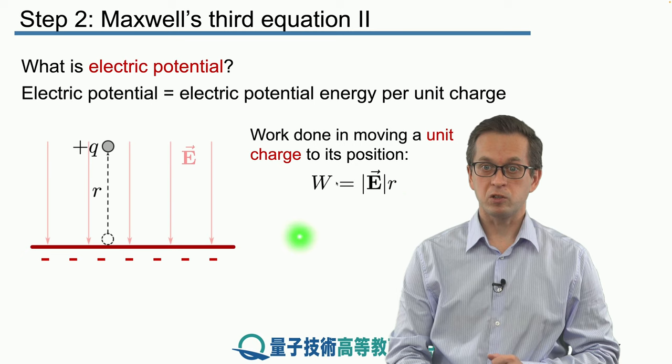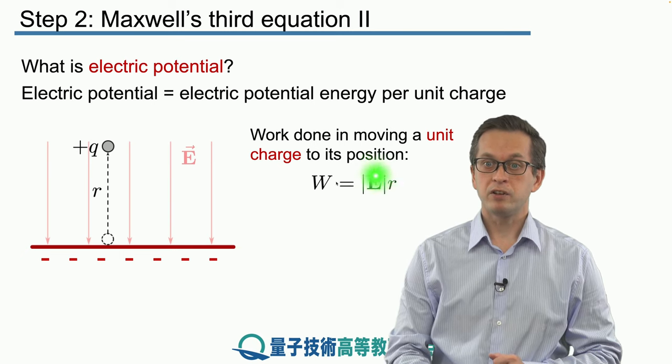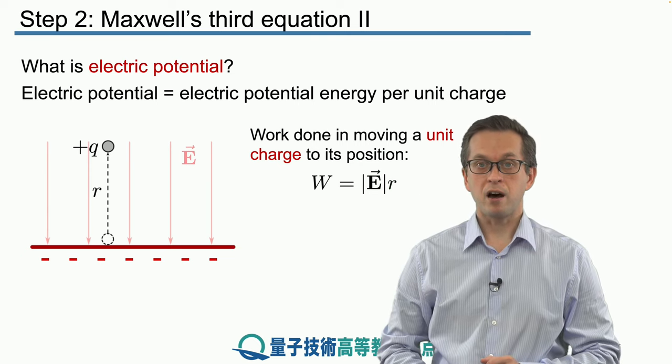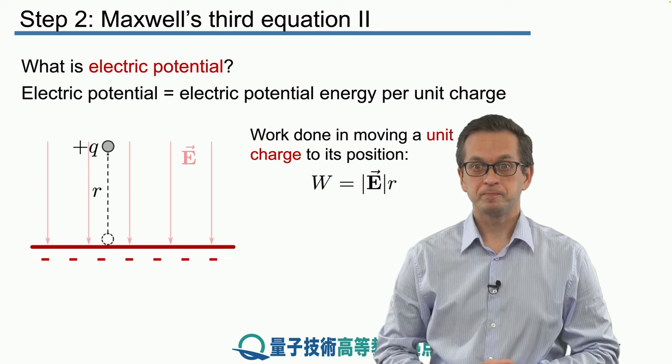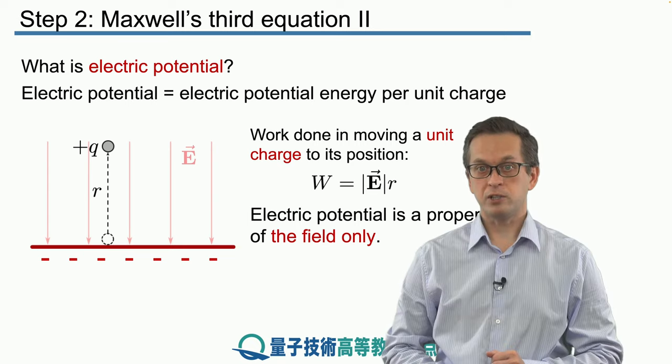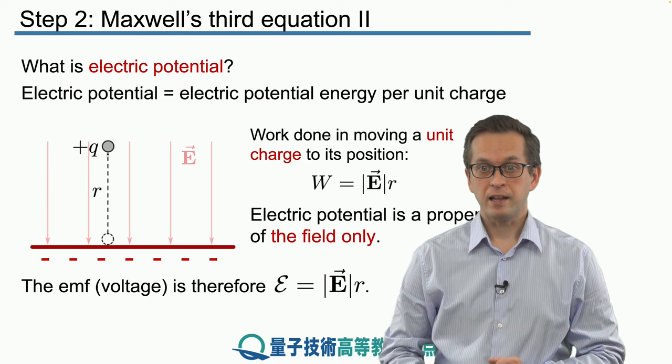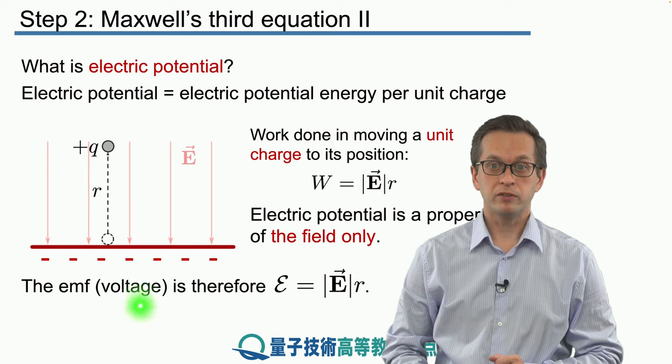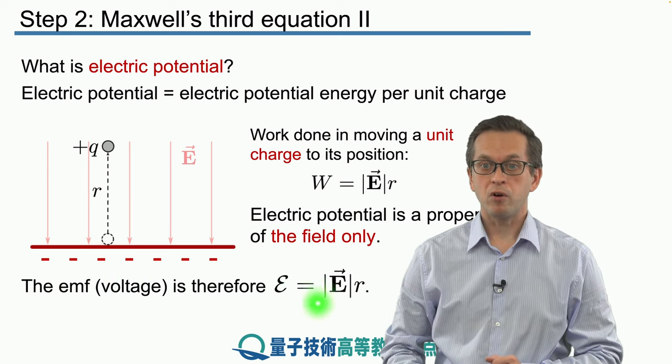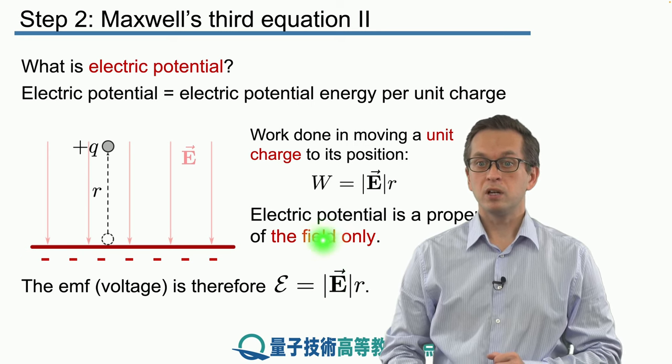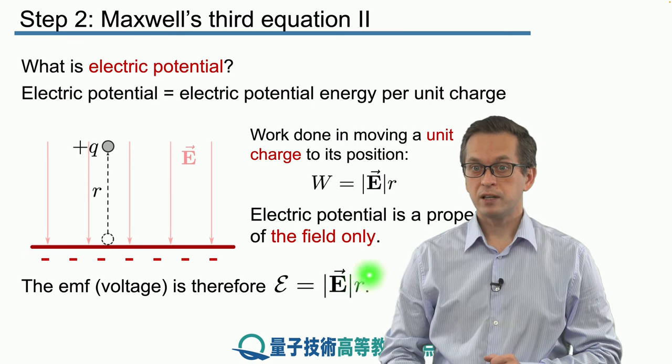So in this case, the work done that needs to be done is given by the magnitude of the electric field times the distance r away from the conducting charged metal plate. And now we see that this is the property of only the field itself and it doesn't depend on the charge itself. And that way we have arrived at an expression for the EMF or the potential difference in terms of only the electric field and some distance r. So we say that the EMF is equal to the magnitude of the electric field times the distance.